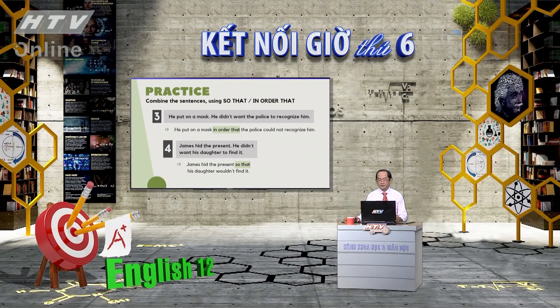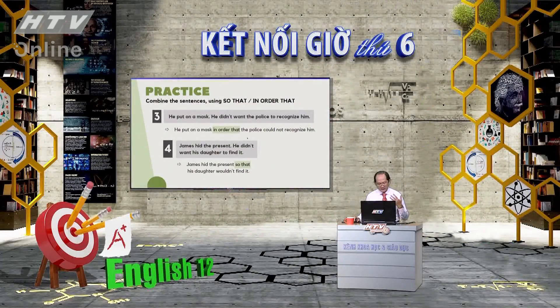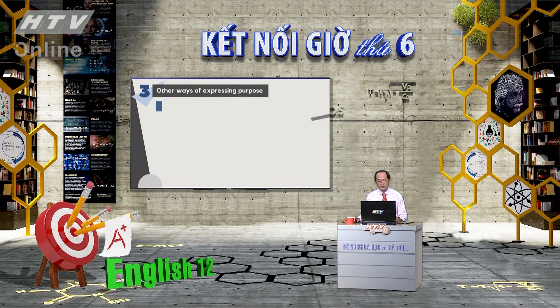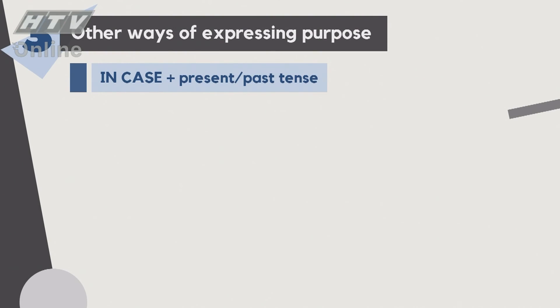Tới đây, chúng ta đã học 'so that', 'in order that', 'so as to', và 'in order to'. Bây giờ sang những cách khác để diễn tả mục đích. Đầu tiên là 'in case' - lưu ý 'in case' đi với present hoặc past tense, và không dùng 'will' hay 'would' với 'in case'.